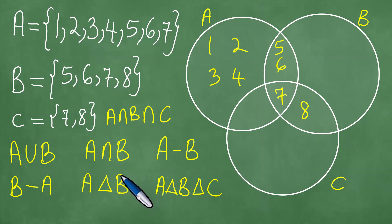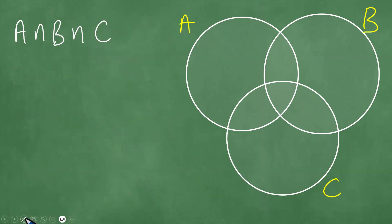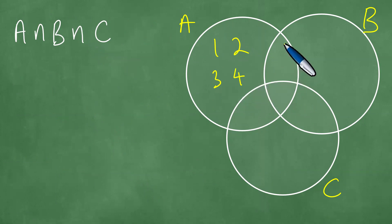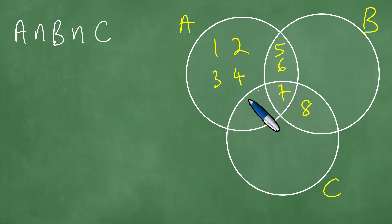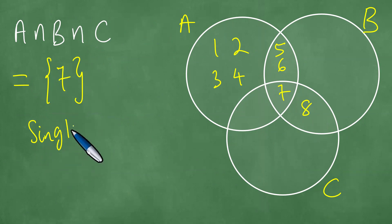Now we continue to analyze this. We want to first find A intersection B intersection C. To find A intersection B intersection C, we look at where all three sets overlap. That intersection consists of the element 7 — it's the set containing the element 7. This set has a specific name: it's called the singleton.